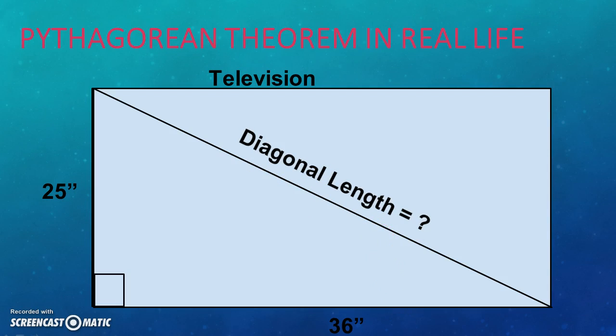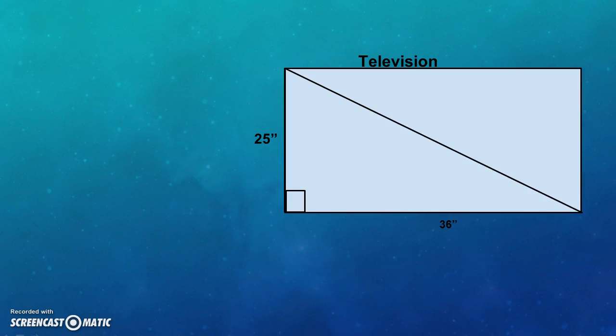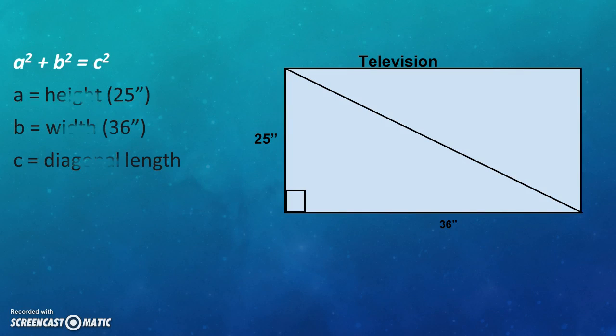Applying Pythagorean theorem, the diagonal length comes out to be forty-three point eighty-two inches.